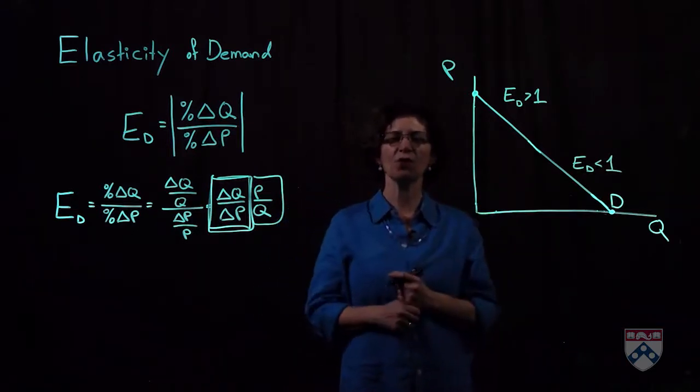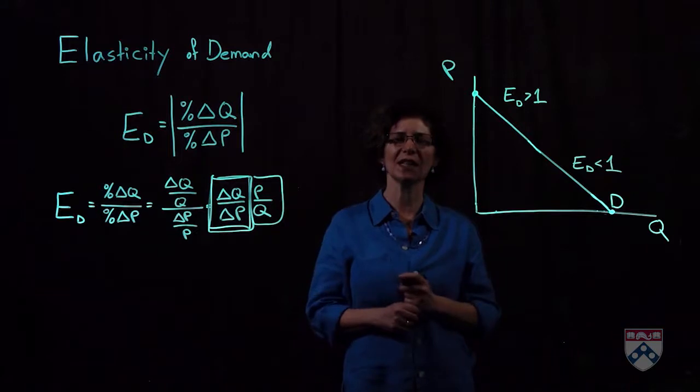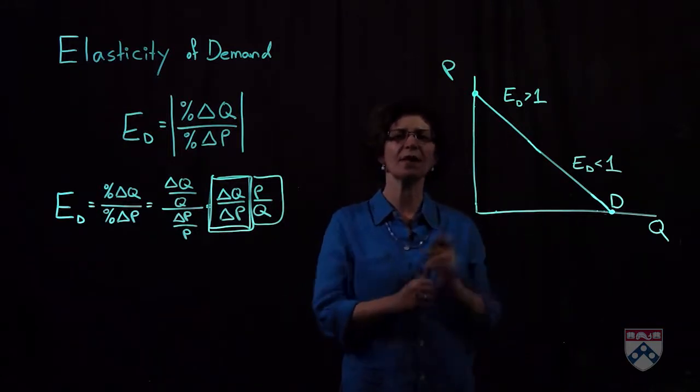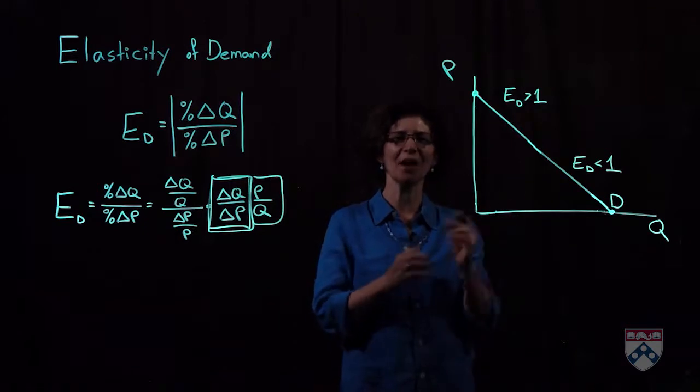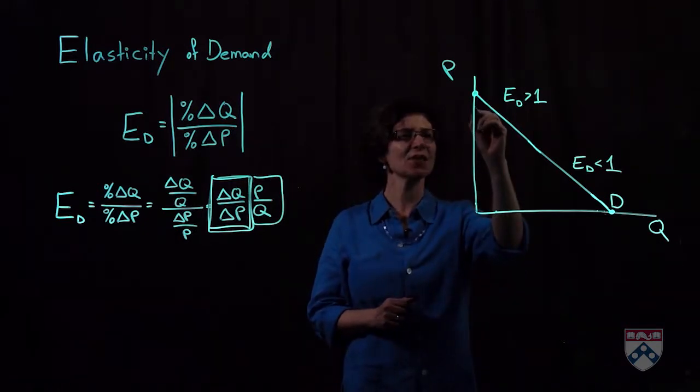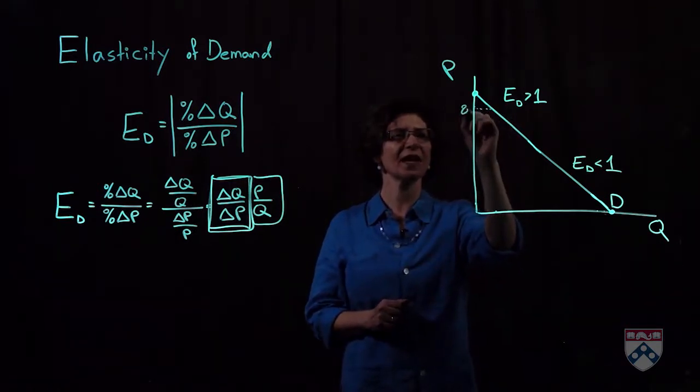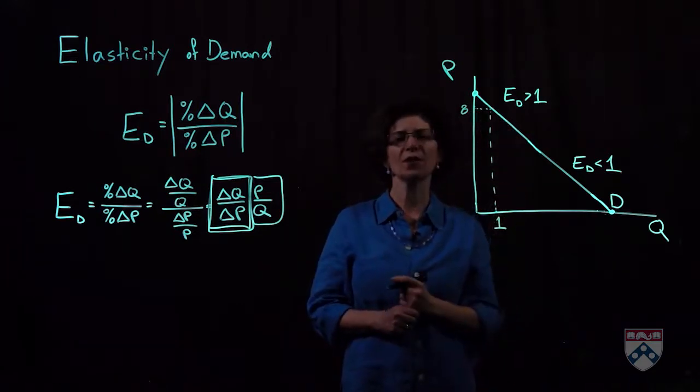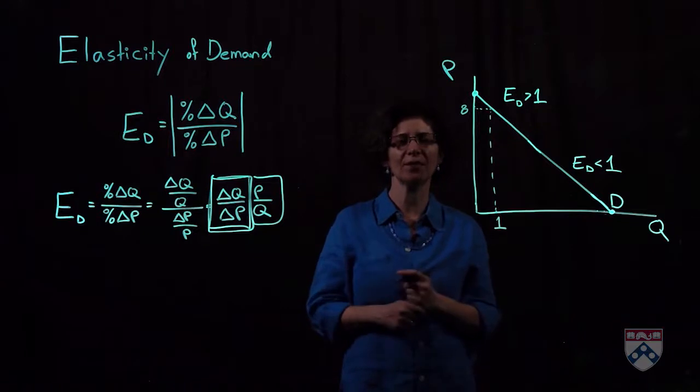Let's think through a quick numerical example to convince us that that's the case. Suppose we're talking about the mango market, or the market for mangoes, and suppose that at a price of $8, one person wants to buy one pound of mangoes.